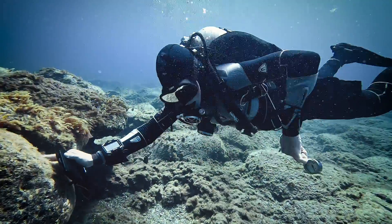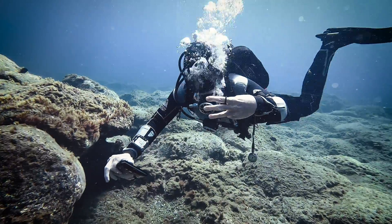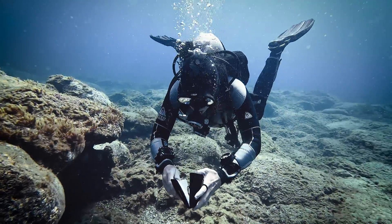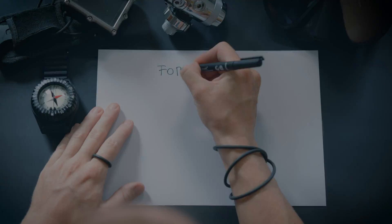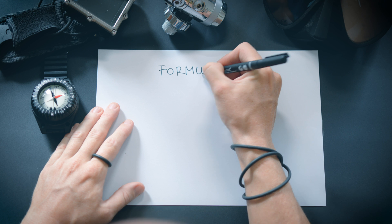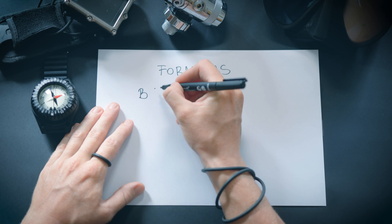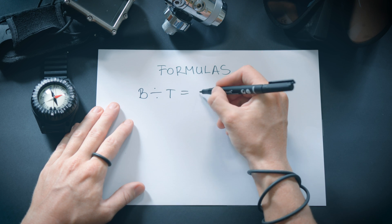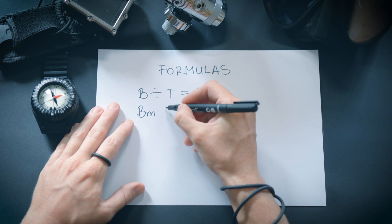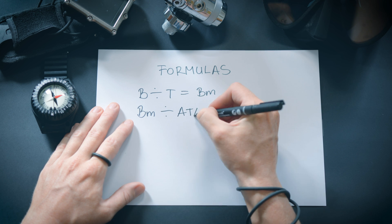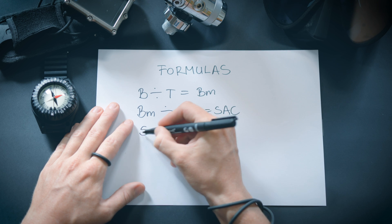After finishing all three methods and gathering the necessary data, you are prepared to calculate your surface air consumption rate. You will apply consistent formulas for all your calculations, so it might be beneficial to make a note of these for future reference. Take the bar used (B) and divide it by the runtime (T), which gives you the bar per minute air consumption. To find the surface equivalent, divide that by the absolute pressure at depth (ATA). This gives you the SAC rate in bar per minute.